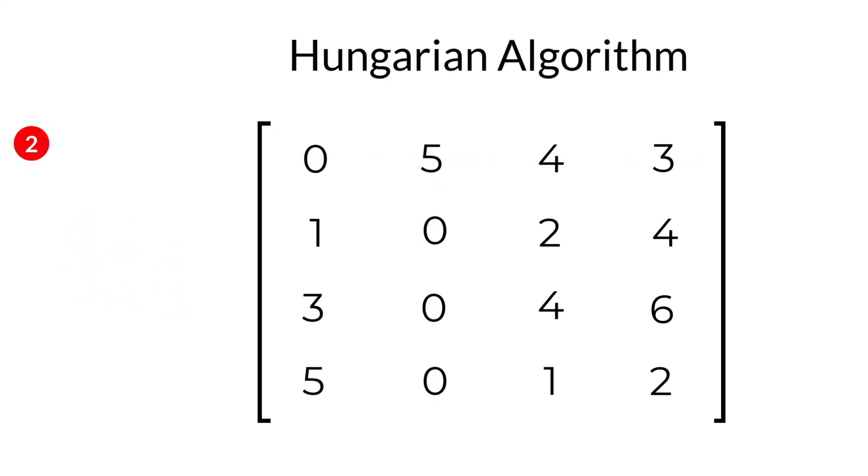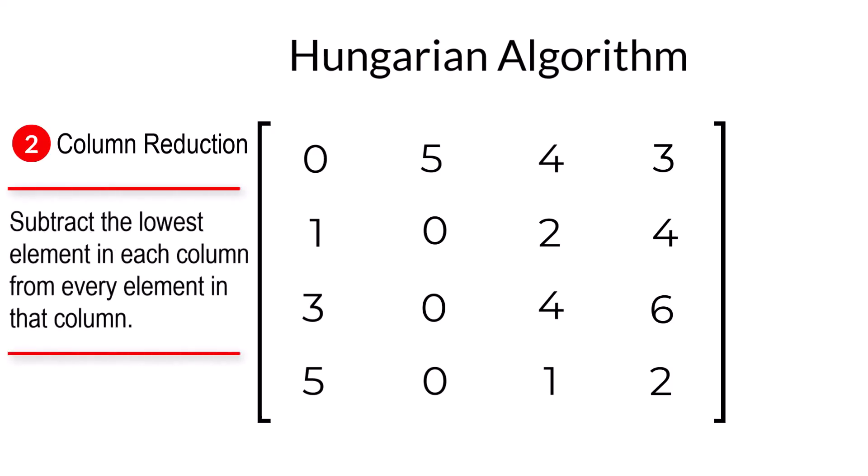Step two is similar to step one, except this time we're operating on the columns. Subtract the lowest element in each column from every element in that column. The minimum value in the first column is a zero. So, we don't need to do anything. The same applies for the second column.